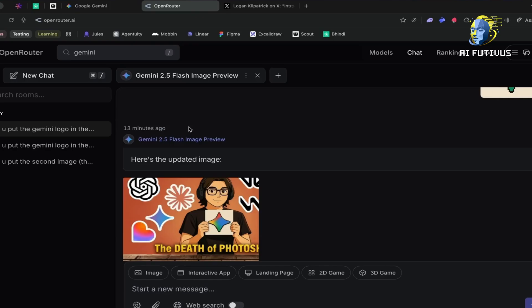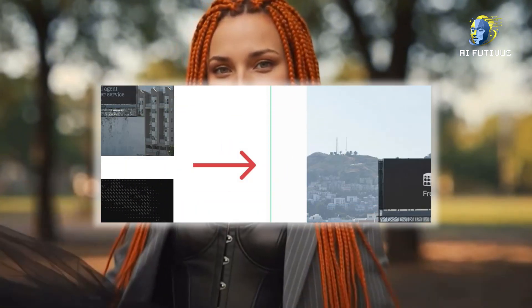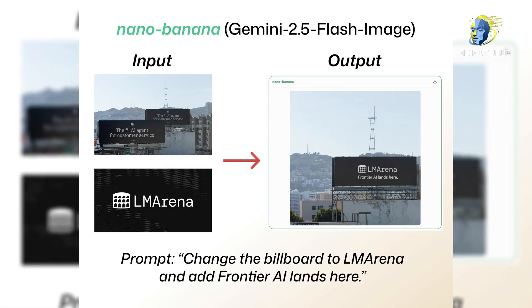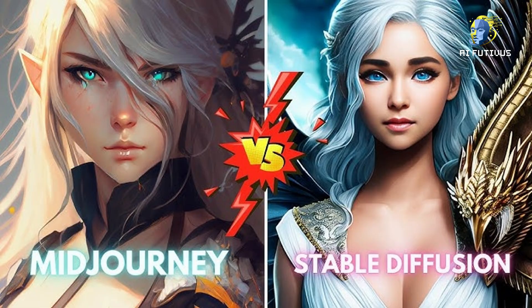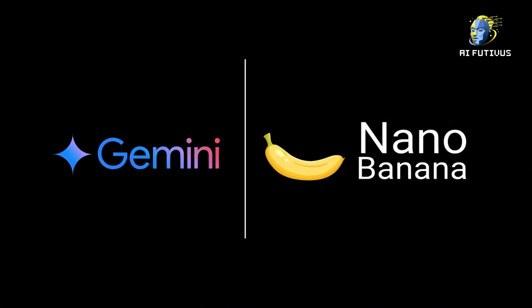Here's the part that feels straight out of a movie. Google didn't tell anyone that Nano Banana was theirs. They released it quietly under a codename — no branding, no big launch. Just a model uploaded to a public leaderboard called LMArena, where AI tools are ranked by real users. And guess what happened? Nano Banana shot straight to the number one spot, beating out Stable Diffusion, beating out MidJourney, even beating some of OpenAI's tools.